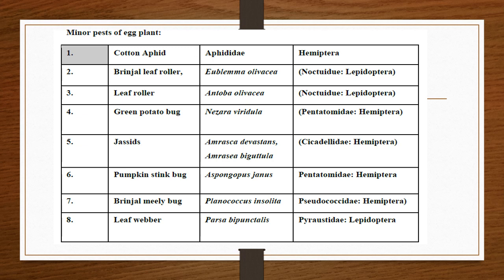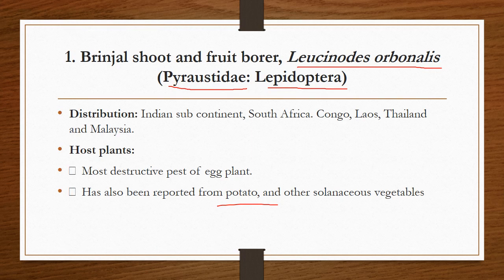The minor pests are brinjal leaf roller, green potato bug, Nezara viridula, jassids, Amrasca devastans, pumpkin Ospungus janus, brinjal mealybug Planococcus insolitus, and leaf webber Sara bipunctalis. Depending on the location, some minor pests become major pests due to changing climate, and in some locations the major pest can become a minor pest.